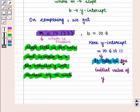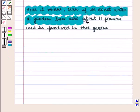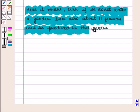It tells us the initial value of y. Here it means even if we do not water a garden, then also about 11 flowers will be produced in that garden.